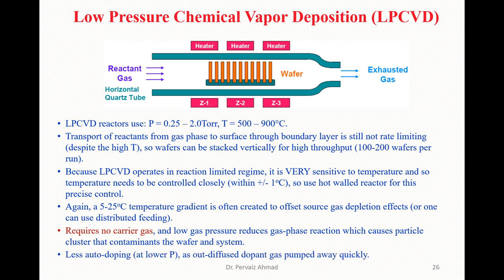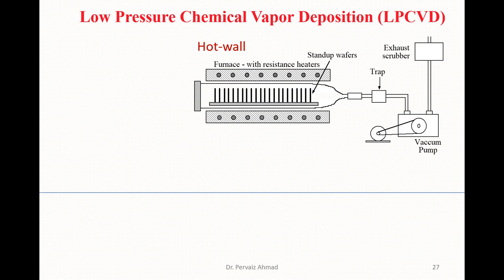There is less auto-doping at low pressures because diffused dopant gas is pumped away quickly. For the hot wall case, the setup for LPCVD has wafers arranged vertically inside the furnace with resistive heating. These vertically aligned stand-up wafers can be clearly seen. A vacuum pump evacuates the system to remove impurities and undesired contaminants, and these are expelled through the exhaust scrubber.